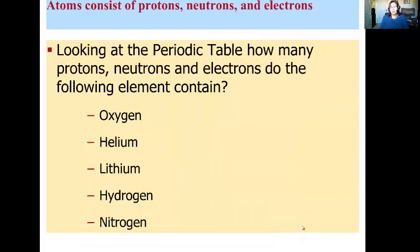So here's a list of elements. See if you can determine the protons, neutrons, and electrons of any of these elements. Remember that if you know the number of protons, you essentially know the number of electrons. So take a pause here and see if you can determine the number of protons, neutrons, and electrons for each of these elements.